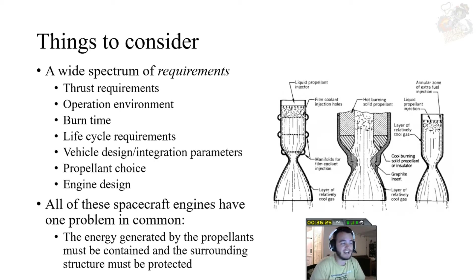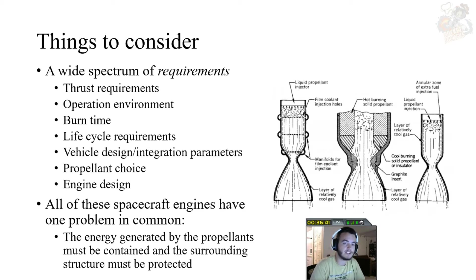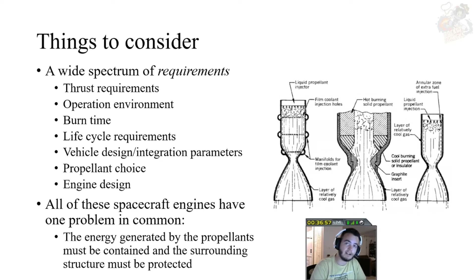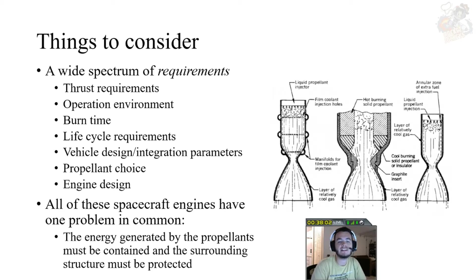You also have to think about how your vehicle and engine are designed. If you have only one rocket engine nozzle versus a cluster of nozzles, that's going to limit you from using radiative cooling and other techniques, because you have to worry about how your nozzle integrates to your vehicle. Propellant choice also limits what you can use for regenerative cooling — for example, are you using cryogenic propellants or solid propellants? All spacecraft engines share a common problem: the energy created by the propellants must be contained, generating both kinetic force and thermal energy that the structure must be protected against.